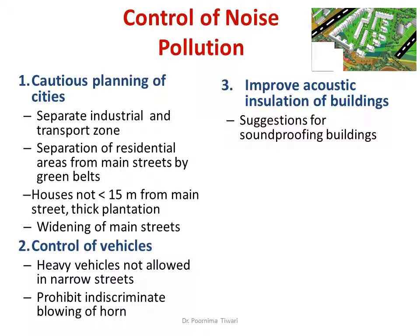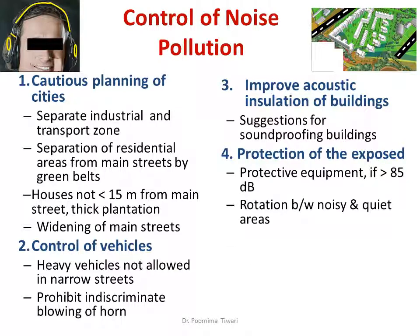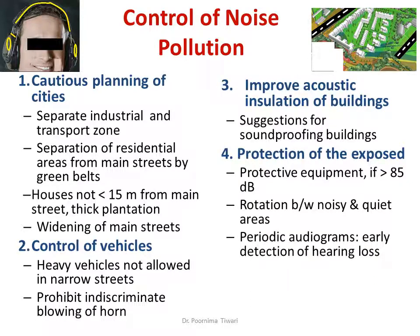Various suggestions for sound-proofing of buildings are discussed. For protection of the exposed: those who are exposed can be provided protective equipment when noise exposure exceeds 85 dB(A). Workers should be rotated between noisy and relatively quieter areas. Despite taking these measures, periodic audiograms should be done so that any hearing loss is detected early and measures taken to prevent deterioration. Finally, legislation — for example, compensation to workers affected by noise exposure — will encourage companies to use all protective measures for their workers.